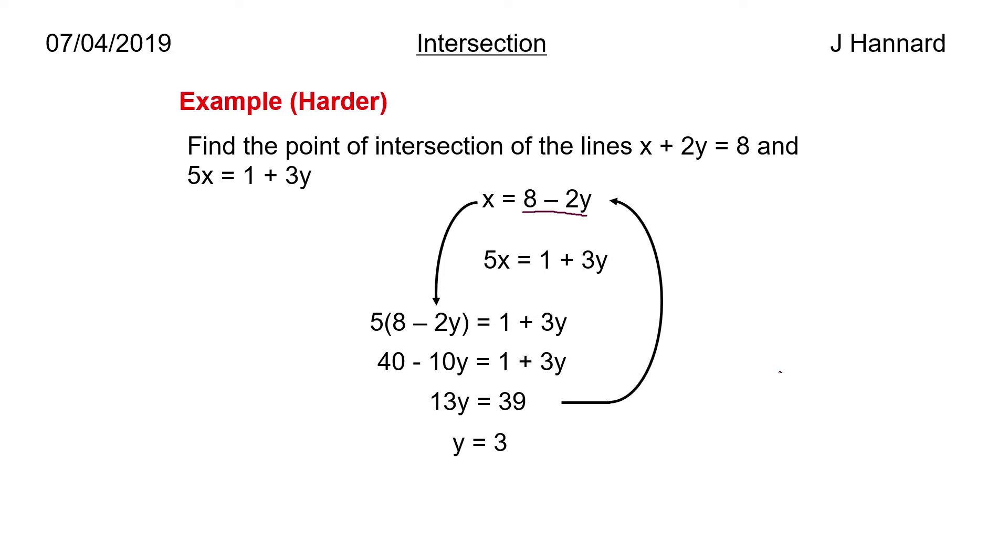So we get x equals 8 minus 2 times 3, which is 8 minus 6, which is 2. So x is 2, that's right. And y is 3 from what we found out before. So this is the final example.